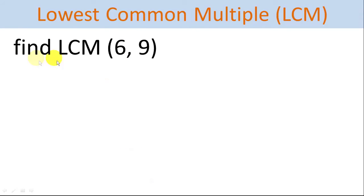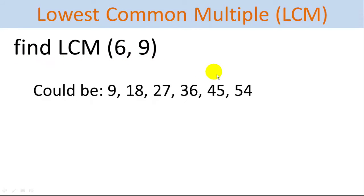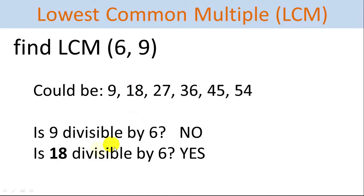Let's find the lowest common multiple of 6 and 9. We look at only the multiples of 9: 9, 18, 27, 36, 45, all the way up to the product of the two numbers, 54 — that's the worst case. And 9 is the best case; it couldn't be lower than 9. We check one by one: is 9 divisible by 6? No. Is 18 divisible by 6? Yes — 6 times 3 equals 18. So our answer is 18.